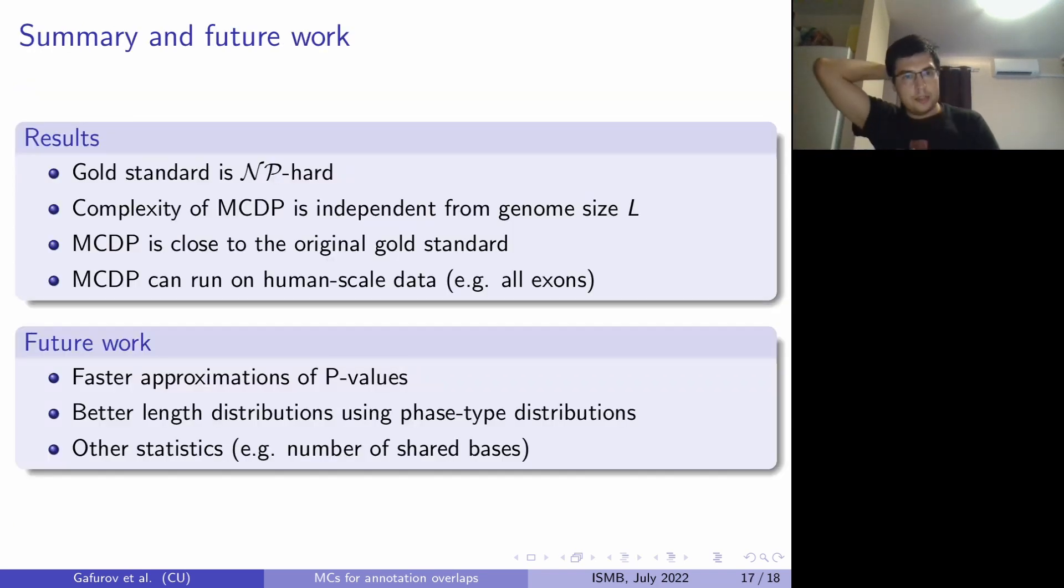So in conclusion, our results is that we have proven that the gold standard is NP-hard. We have then altered the gold standard to come up with a Markov Chain null hypothesis. And we have shown that our proposed algorithm to compute p-value has complexity independent from the genome size. We have shown that MCDP is close to the original gold standard, even though it is an alteration. And we have shown that we can run our algorithm on human-scale data and large human-scale datasets.